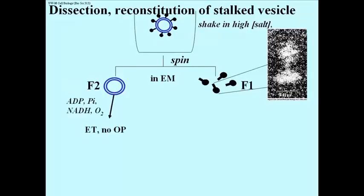Fraction 2, F2, the smooth vesicle in the pellet, would conduct electron transport, but could not make ATP. Fraction 1, the isolated stalked particle would not do electron transport, and of course would not do ATP synthesis.